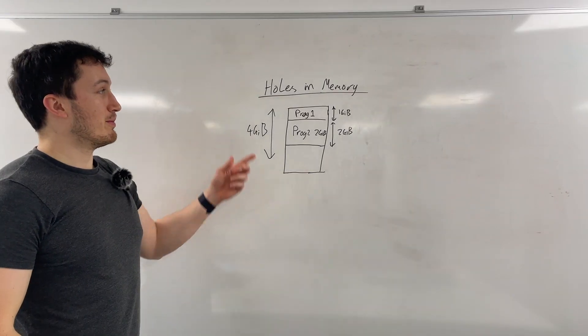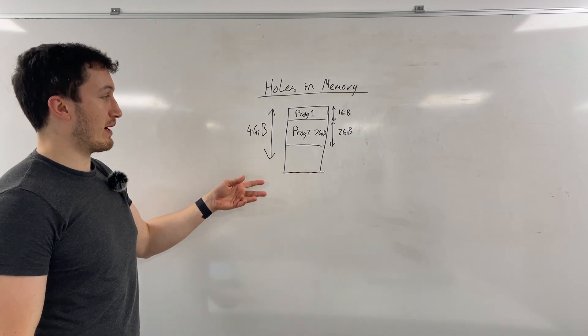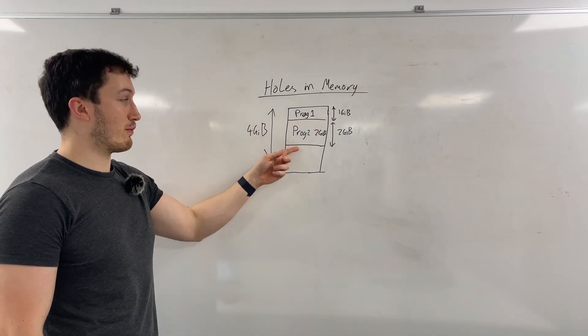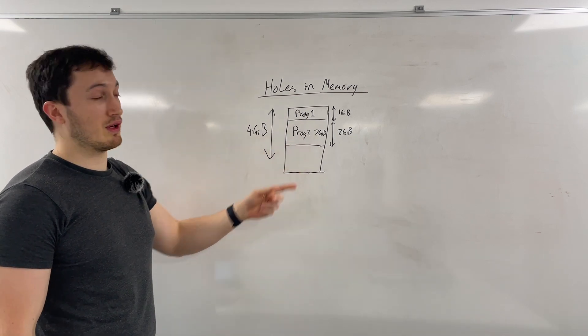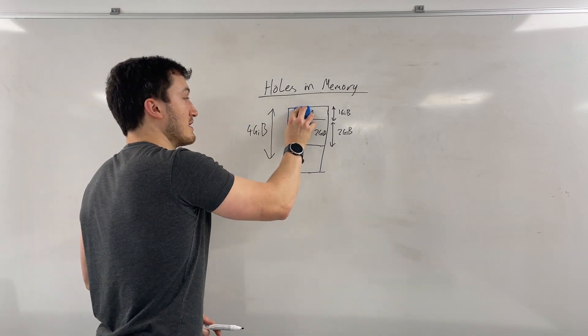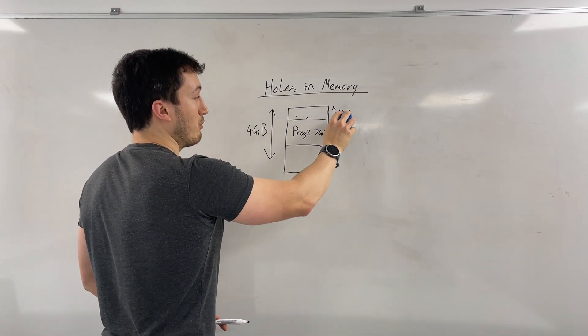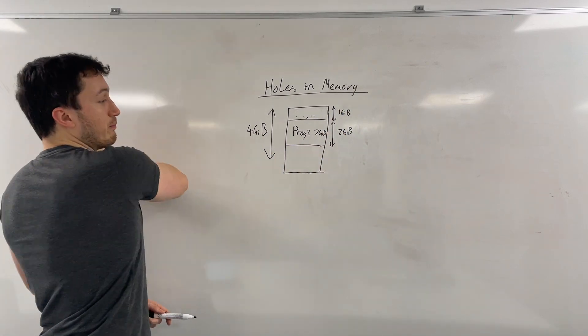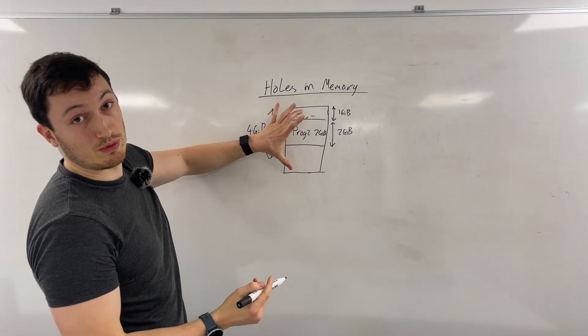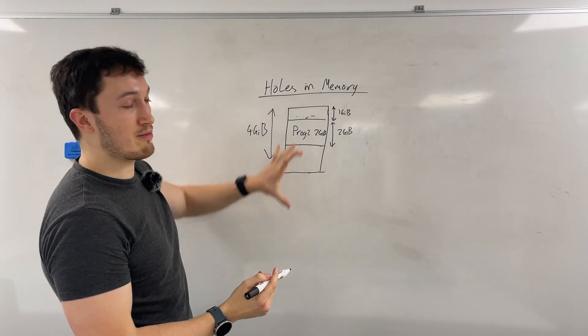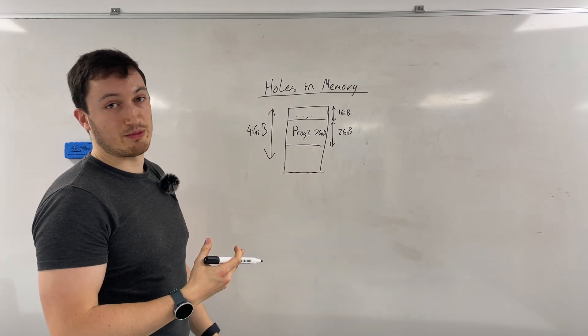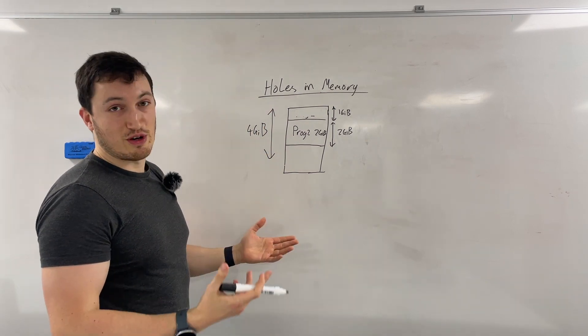So we have the other problem, which is holes in memory. So imagine we've got a four gigabyte address space. And you've got program one, which takes up one gigabyte of memory. And you've got program two, that takes up two gigabytes of memory. You want to kick off program one out and put it onto disk. So now you have one gigabyte above and one gigabyte below. And the program that you wanted to load in, it's two gigabytes. Well, there's not two consecutive gigabytes of memory. So you can't have both programs in. So you've got holes above and below in your memory space, which virtual memory will solve.